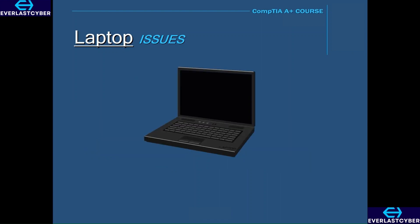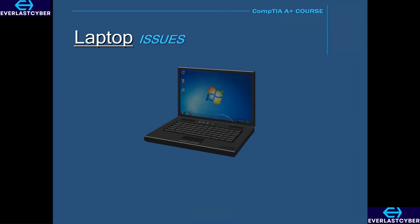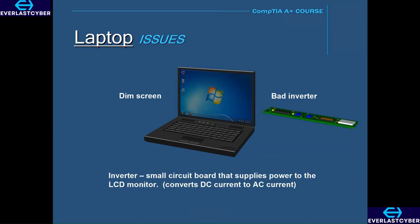Another problem is when you turn the laptop on and the image is very faint — in other words, the display is very dim. In this case, most likely you would have to replace the inverter. The inverter is a small circuit board that supplies power to the LCD monitor; it converts DC current to AC current. The inverter is usually mounted inside the display panel just below the screen.